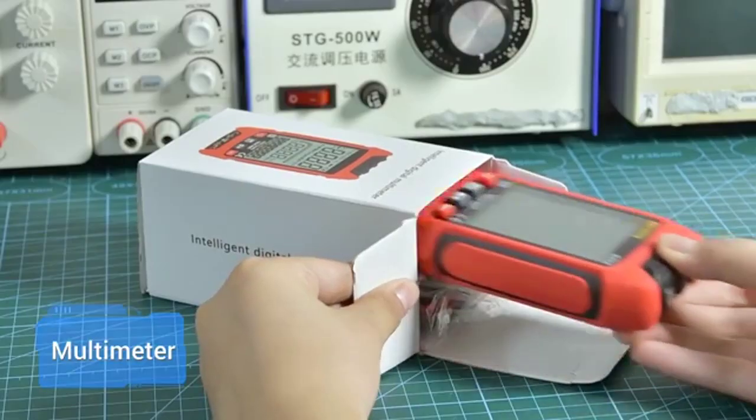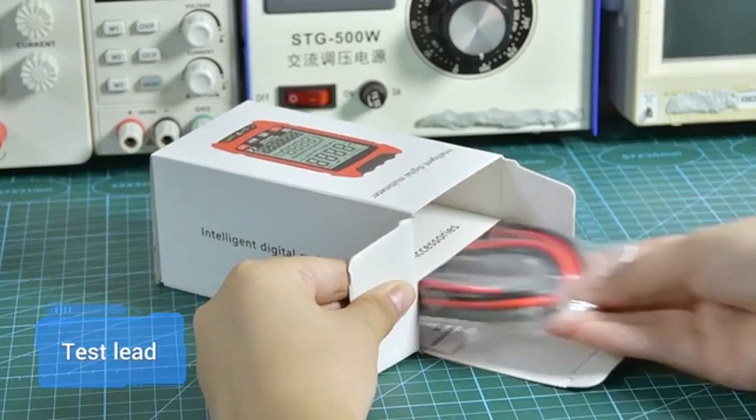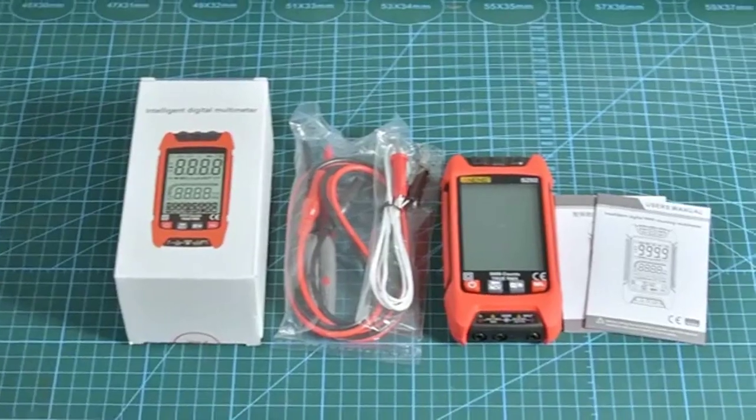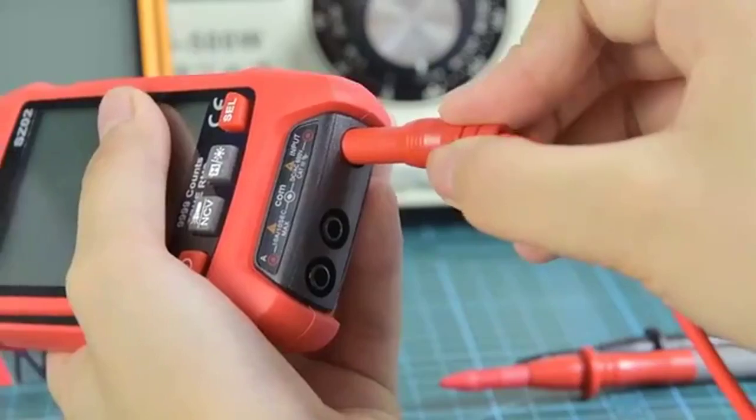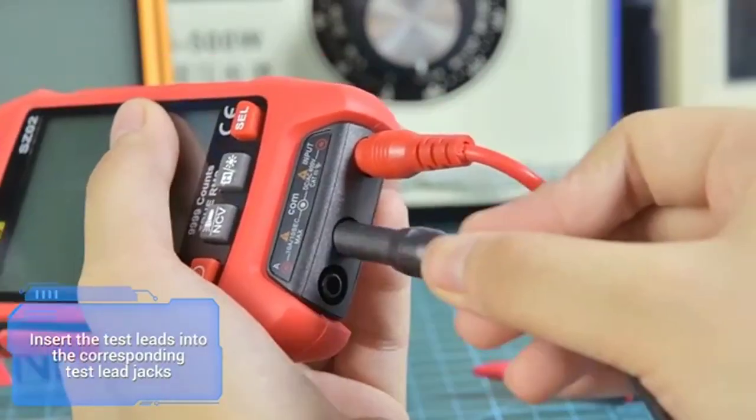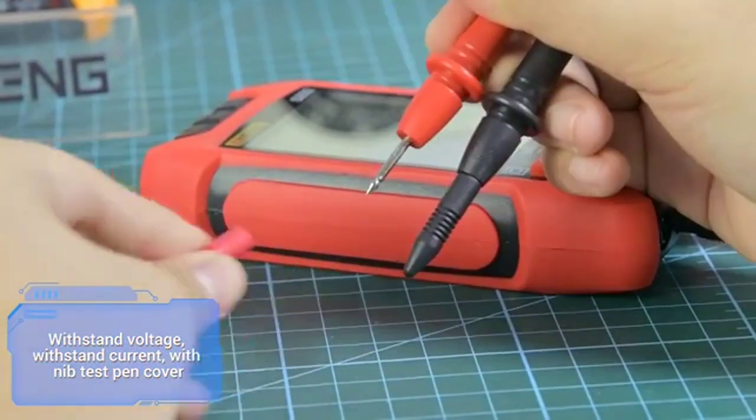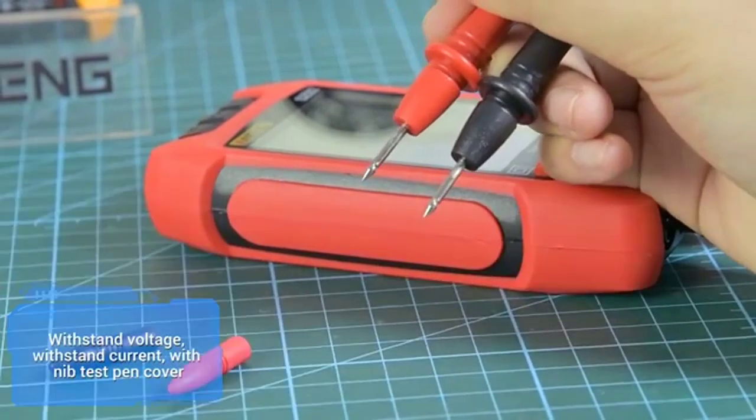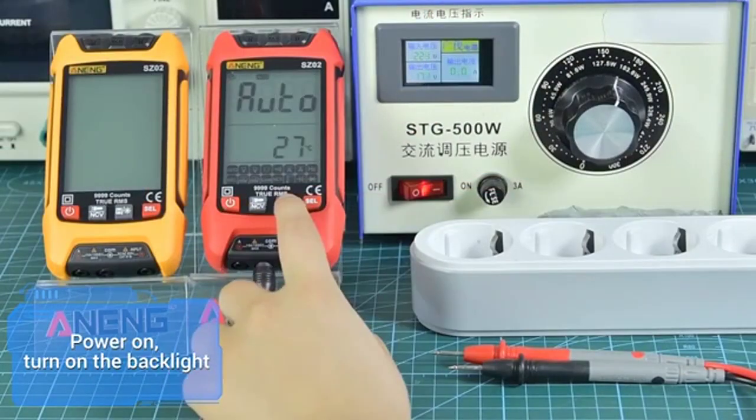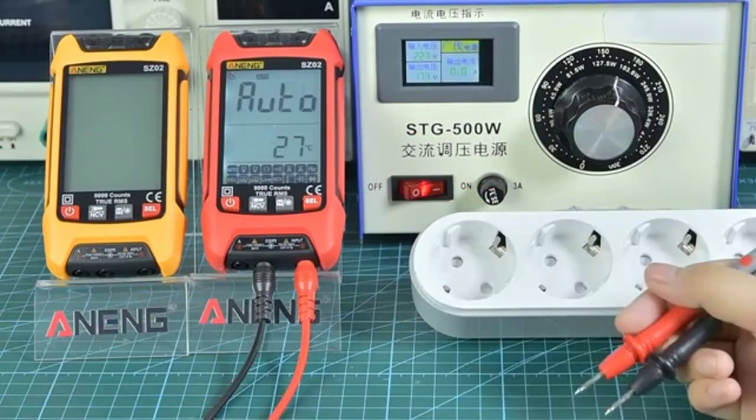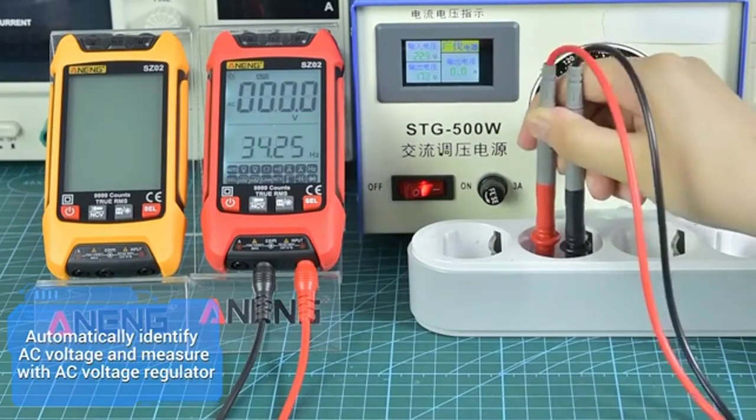This multimeter package includes the temperature line, lead wires, and manual. The high configuration multimeter features high voltage resistance, current resistance with pen tip protection cover, and backlight. Insert the test leads into the corresponding test lead jacks, power on, and turn on the backlight. The multimeter can automatically identify AC voltage.